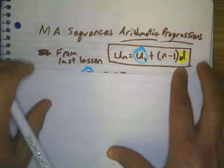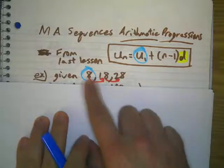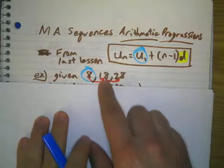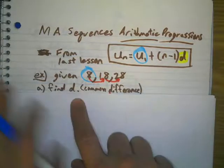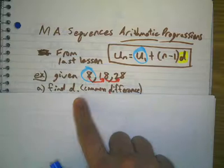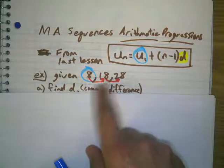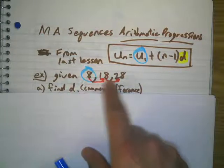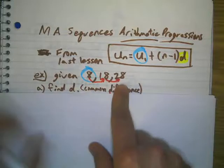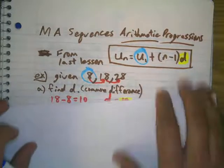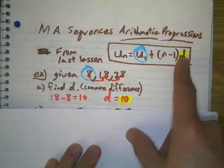So what if I give you an example like this: 8, 18, 28, and I ask you to find the common difference d. Well, the difference between 18 and 8 is 10. It's increasing by 10, so my common difference is going to be 10. That's this value here.